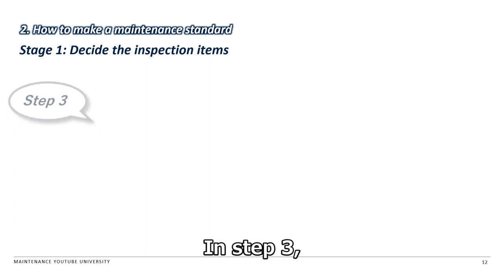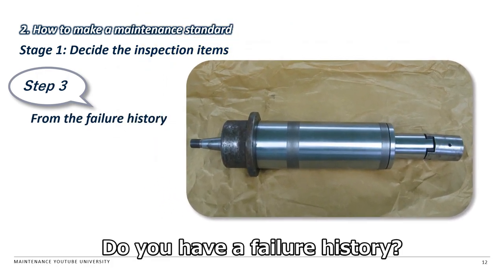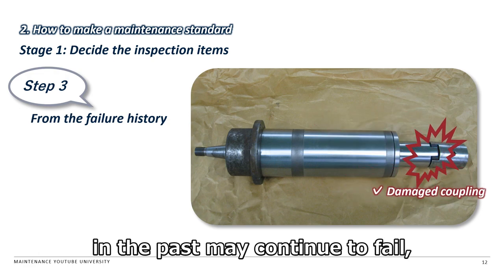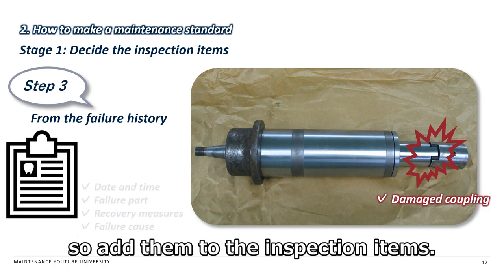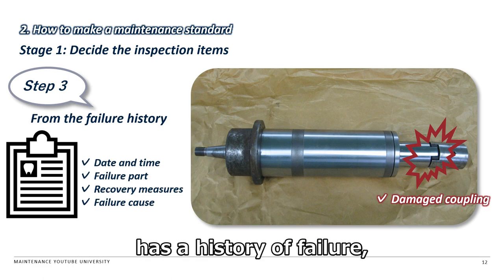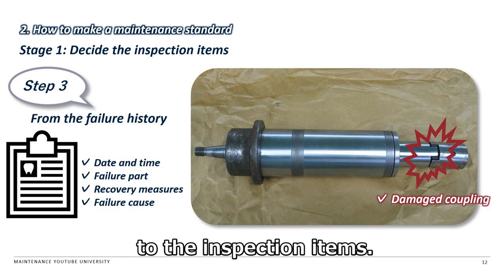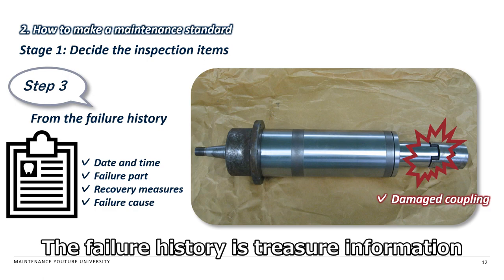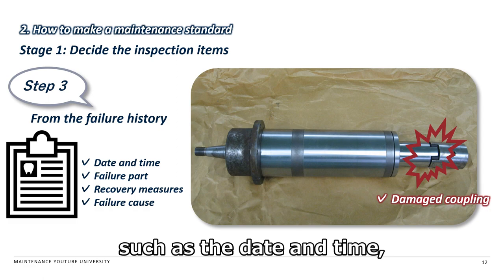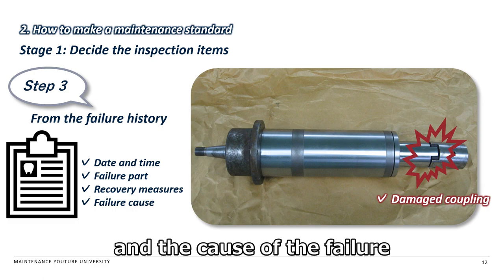In Step 3, the inspection items are decided from the past failure history. Do you have a failure history? Parts that have failed in the past may continue to fail, so add them to the inspection items. For example, if the coupling that connects the shaft has a history of failure, this coupling should be added to the inspection items. The failure history is treasure information for maintenance. Therefore, be sure to include information such as the date and time, the location of failure, recovery measures, and cause of the failure in the failure history.